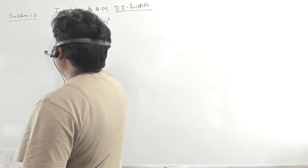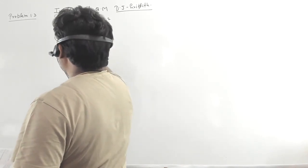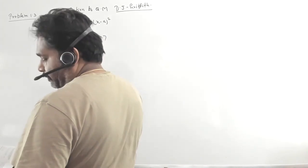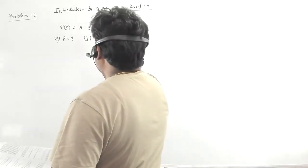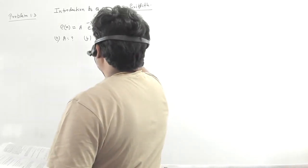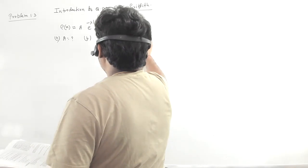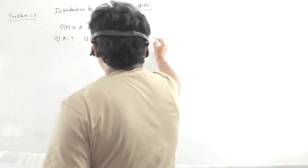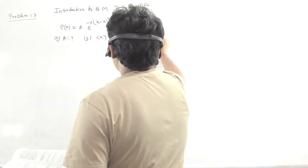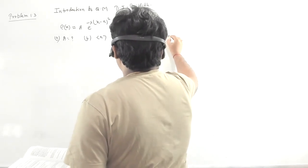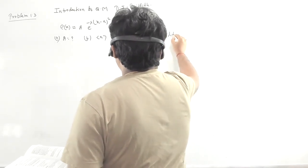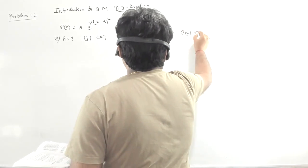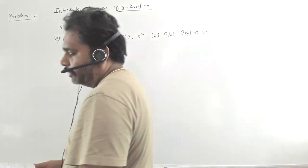This is part A of the problem. The second part is that we have to calculate the expectation value of x, and then the expectation value of x² as well as σ². That is part B. And part C is we have to plot ρ(x) versus x.